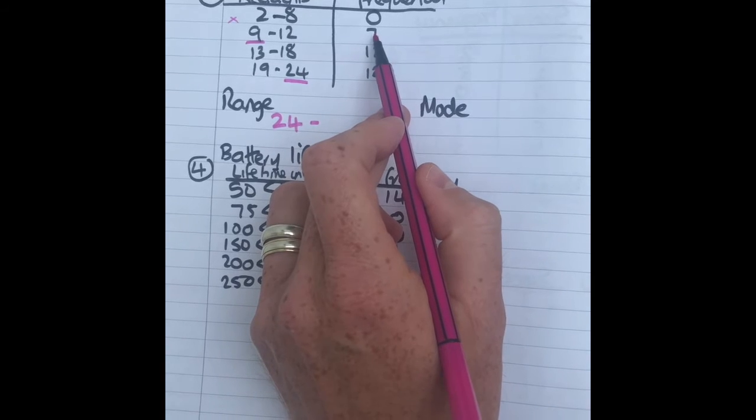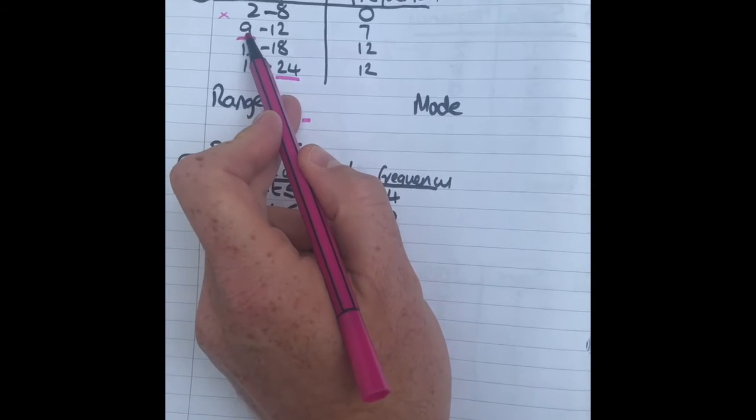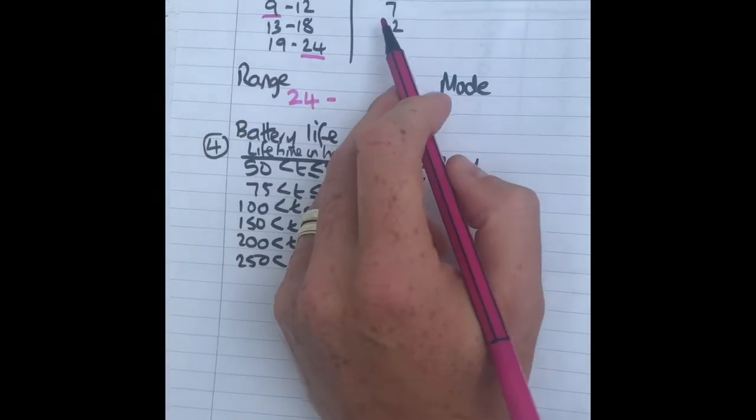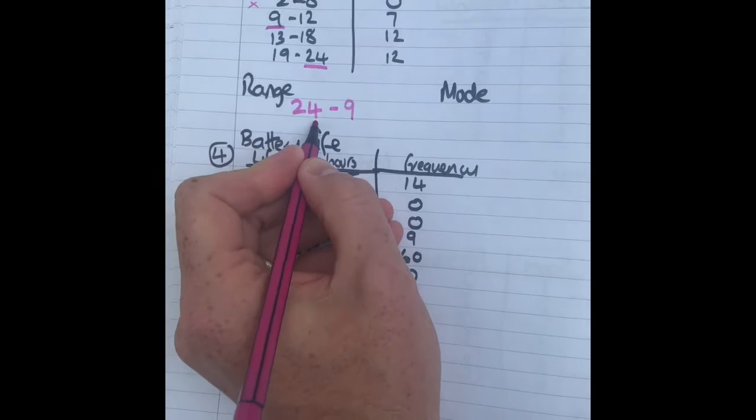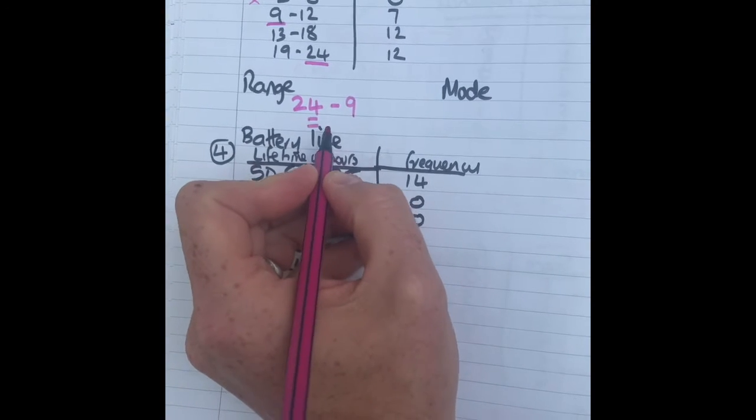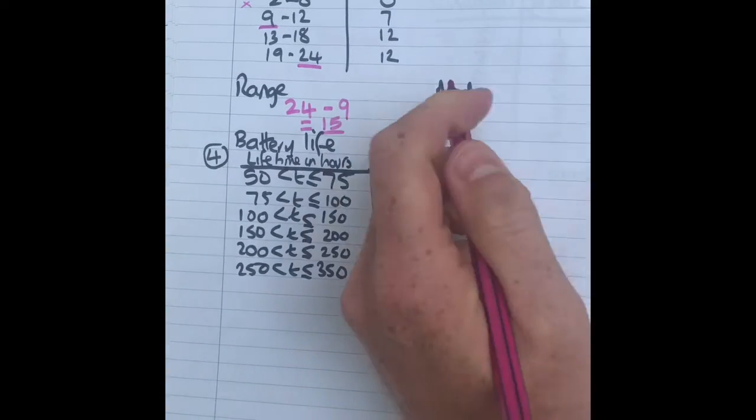Remember in this case, the seven within that group, you don't know where they are, but it could have been that they were 9. So the seven between 9 and 12, the lowest it could be is 9. So therefore the lowest value is 9. So 24 take away 9 is 15, that's the range.